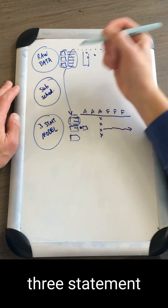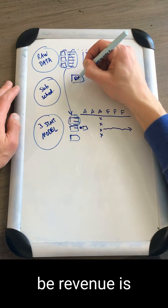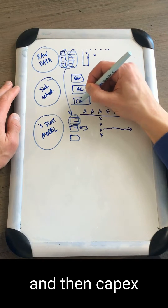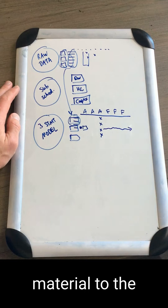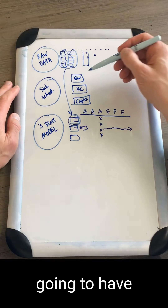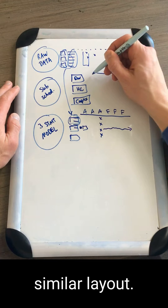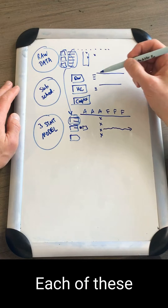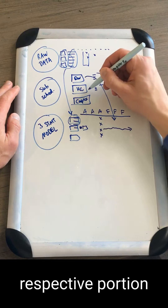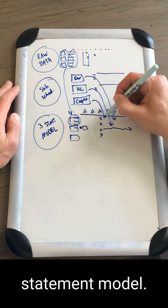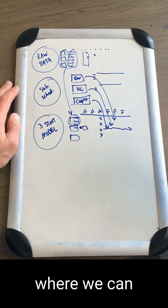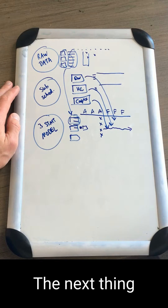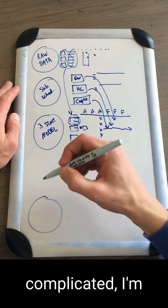But something with a lot more detail, like revenue, headcount, or capital expense, is going to require a sub-schedule. These sub-schedules go behind my three statement model — revenue will be one, headcount will definitely be another, and capex probably another. This is really anything that's material to the company. They'll have a similar layout — dates and line items — and each one feeds into the respective portion of the three statement model.